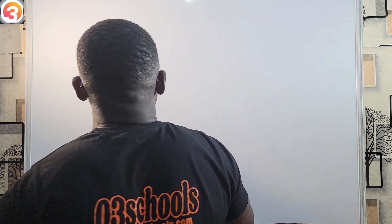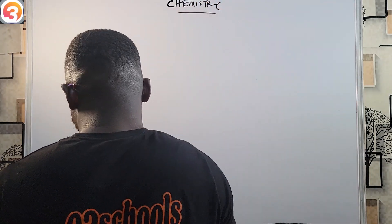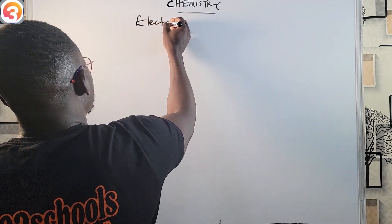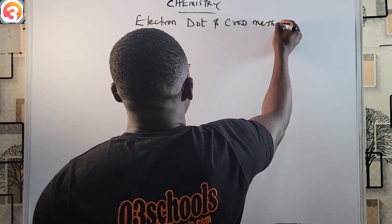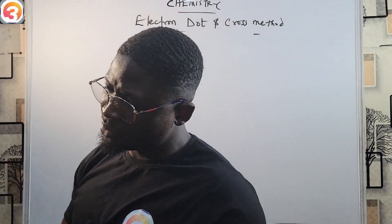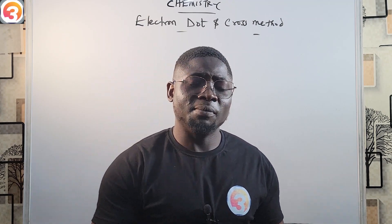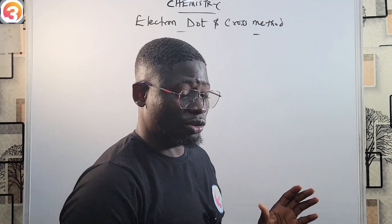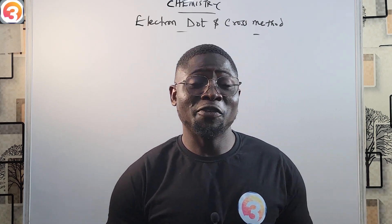Hello guys and welcome back to JAM chemistry class. In this class I'm going to be looking at the electron dots and cross method of writing electronic configuration. We've talked before about the principles that guide the writing of electronic configuration and the various methods we'll be looking at one after the other. Today's video talks about the electron dot and cross method — very easy, so smile and join me.